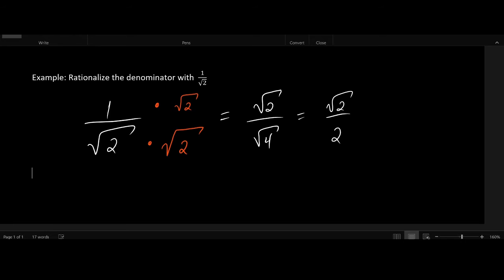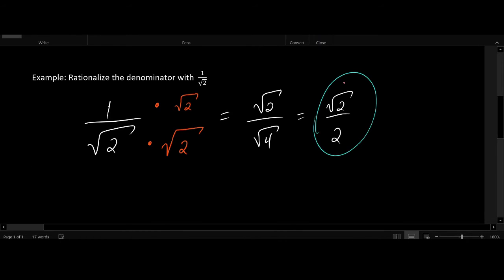So what have we done? We have rewritten the fraction so that instead of having a square root in the denominator, we have a square root in the numerator. No more square roots left in the denominator. And so this would be our final answer.